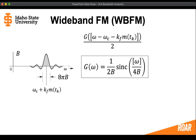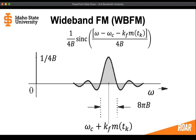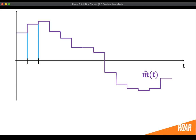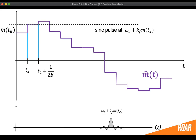Because our sinc pulse was shifted, we have to substitute in our constant frequency to account for the shift that occurred. Looking at just the positive frequency, we have a sinc pulse shifted to the carrier frequency plus kf multiplied by the message value at our staircase cell. So each different point on our staircase gives us a sinc pulse that corresponds to a slightly different frequency. Each place on the staircase corresponds to a sinc pulse at the carrier frequency plus kf times m(tk).